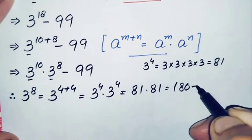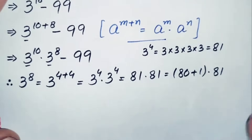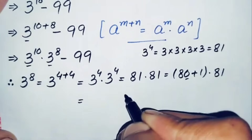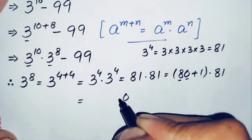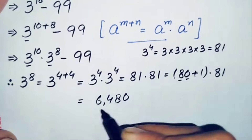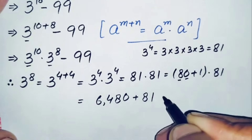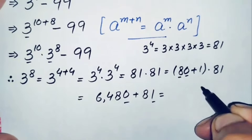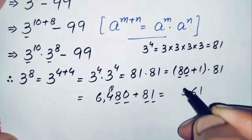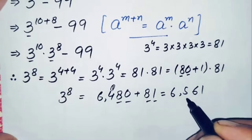We replace 3^4 with 81, so 3^8 = 81 × 81. Writing 81 as (80+1) × 81: 81 times 80 gives 6480, and 81 times 1 gives 81. Adding: 6480 + 81 = 6561. So the value of 3^8 is 6561.